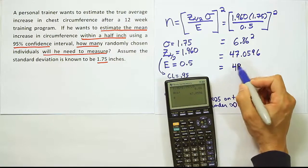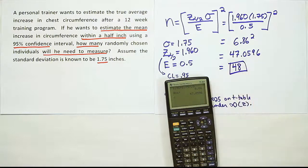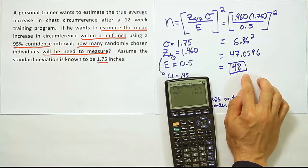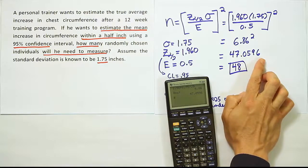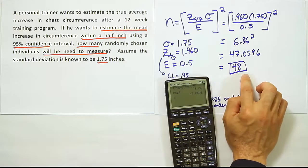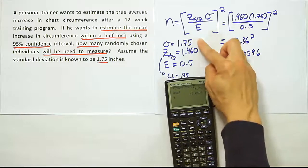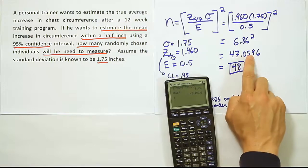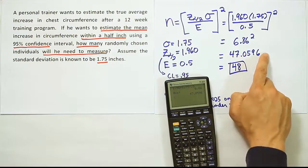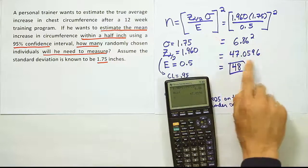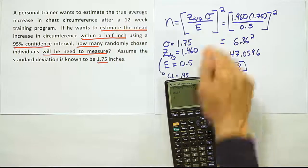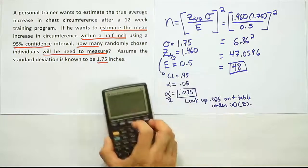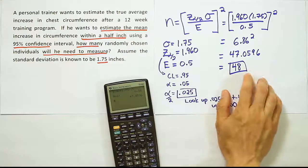Remember that even though this would normally round to 47, we're going to call it 48 because we're looking for the number of people that we would have to measure, and we can't measure a fraction of a human being. We're going to have to sample 48 people to make sure we have this quality level that's been specified. 47.05 is the minimum, we're going up to 48, so we'll actually have a bit more quality than we promised. That's our sample size, 48.